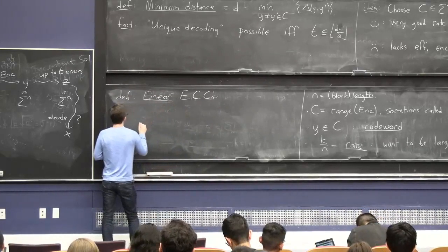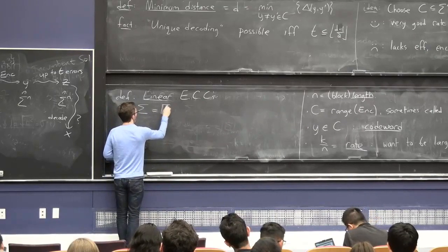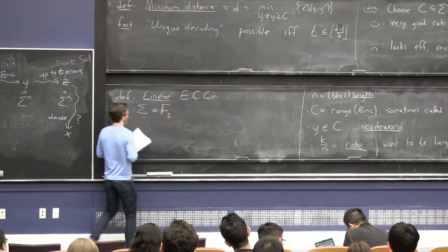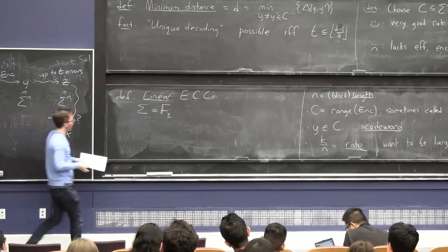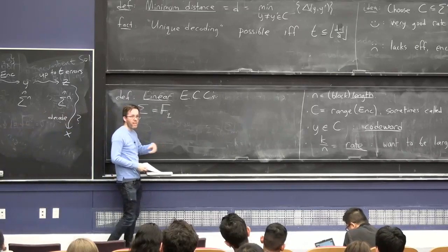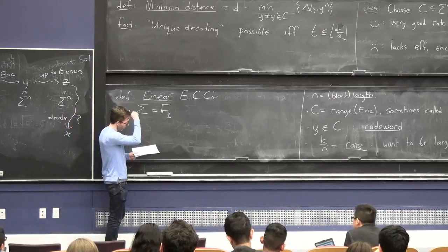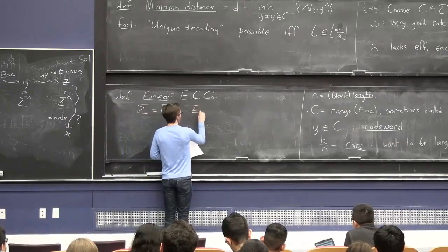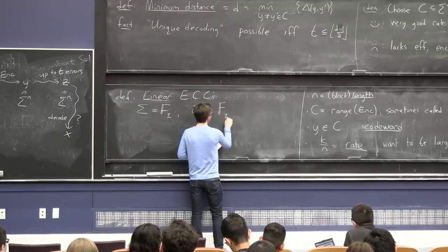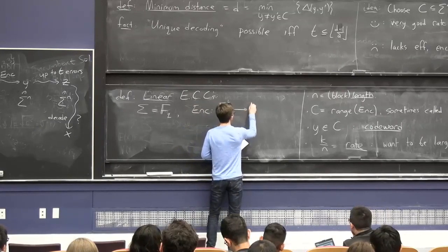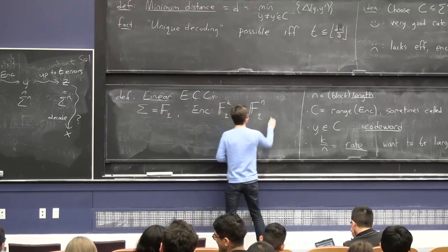What is a linear error correcting code? First, the alphabet set is identified with a finite field. In particular, your alphabet will be a prime power. We know there's a finite field of size 2^L for every L, popular values in computer science. The encoding map, which we think of as mapping vectors of length k over a field of size q into vectors of length n of size q, is a linear transformation.